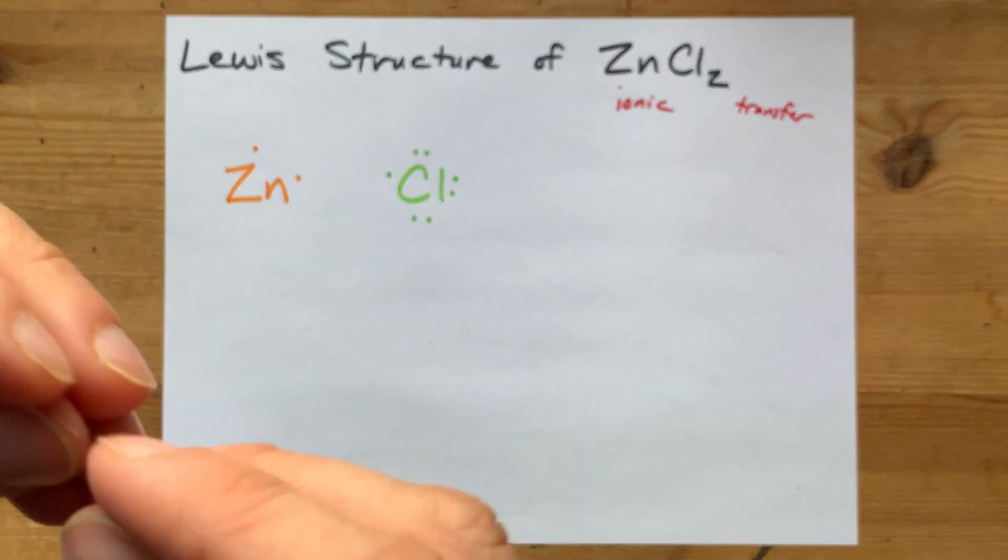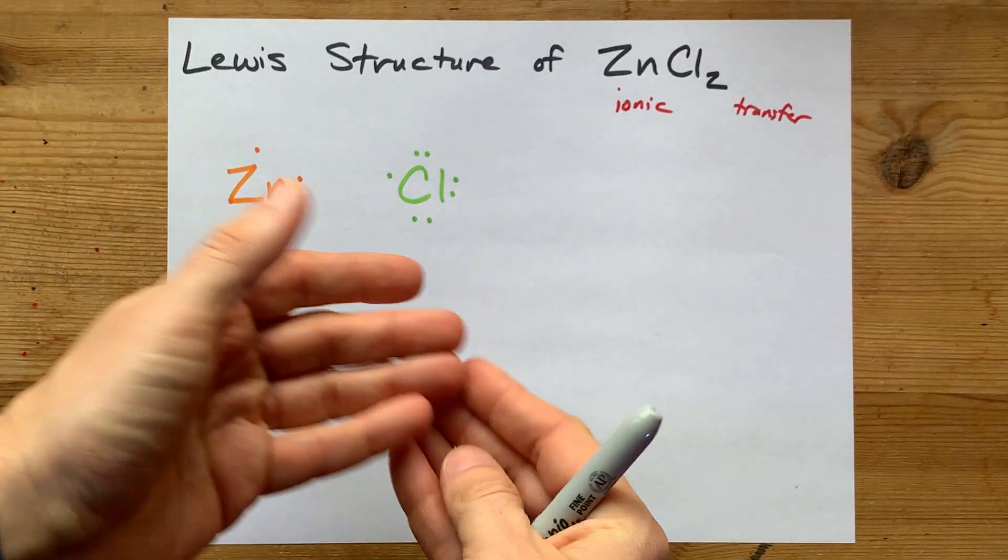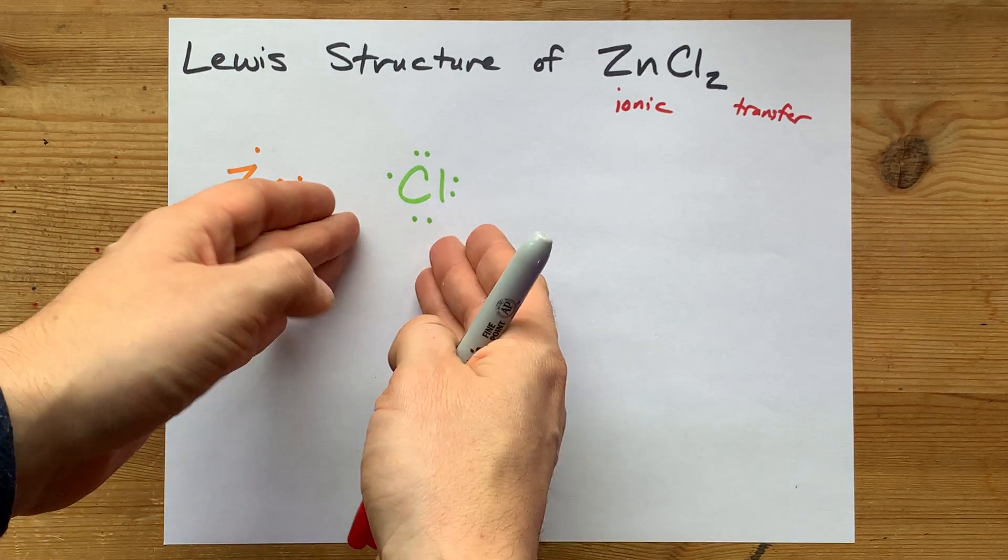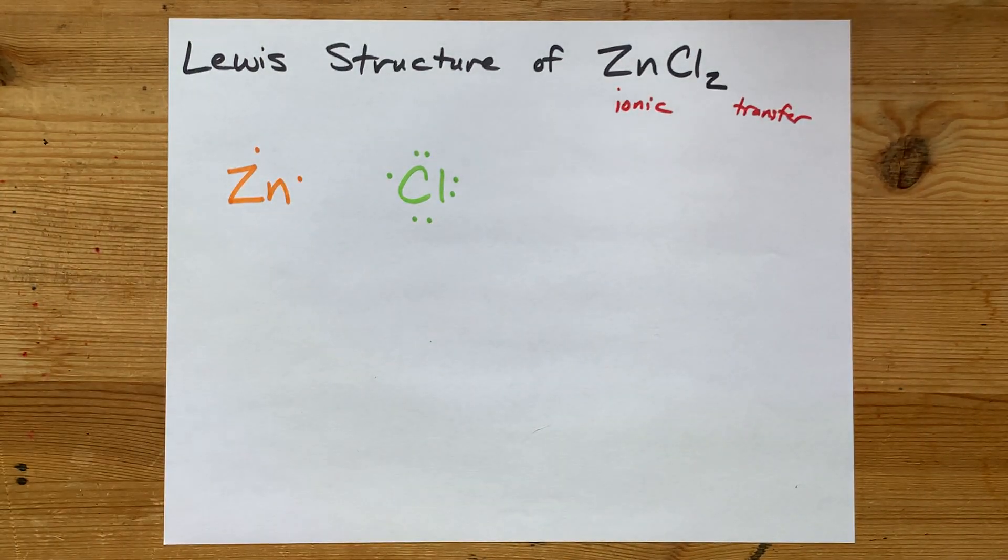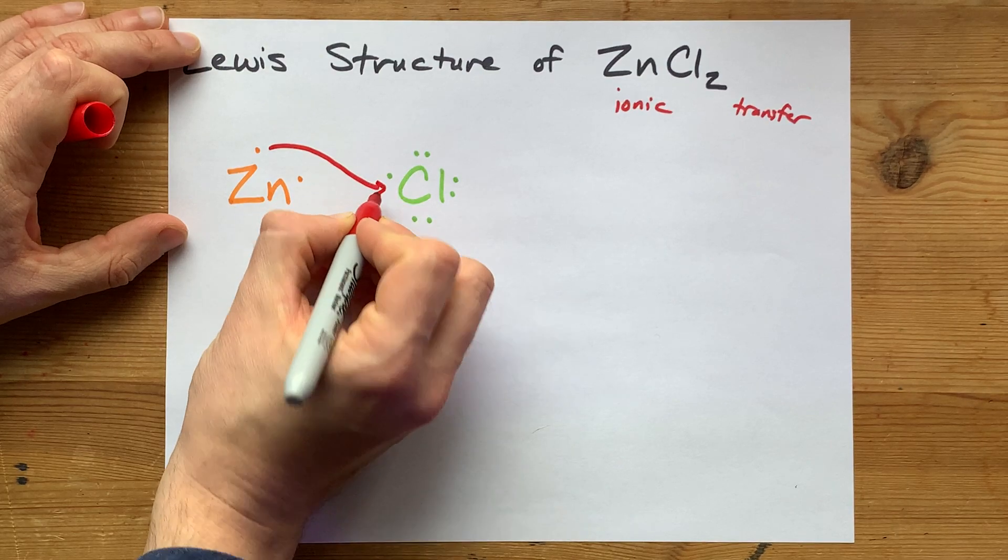Chlorine, the non-metal, wants to satisfy the octet rule. It wants eight electrons in its outer shell, and currently it only has seven. Where's it going to get the extra? A metal will give its electron away.